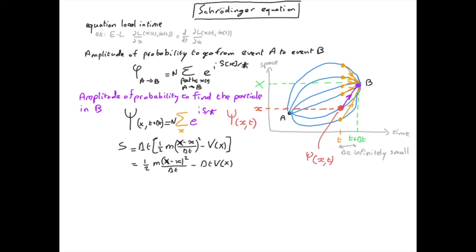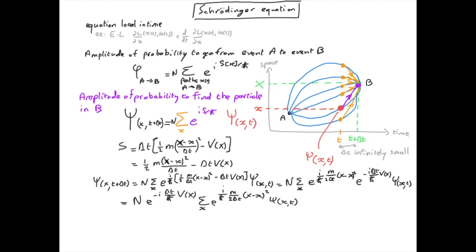We substitute the action into our amplitude of probability expression. In the first equality we just reported the expression for s. In the second equality we use the fact that the exponential of a sum is the product of the exponentials. In the third equality, the potential is a function of capital X and therefore doesn't depend on small x, so it can be factorized in front of the sum.